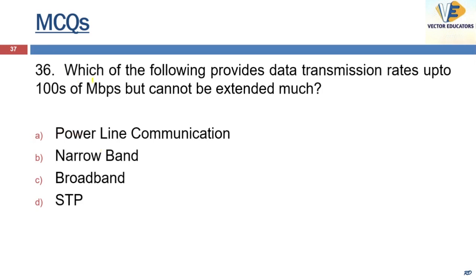Which of the following provides data transmission rates up to hundreds of Mbps but cannot be extended much? It is broadband, and it works on higher frequency. The frequency range is 1.8 to 250 megahertz.